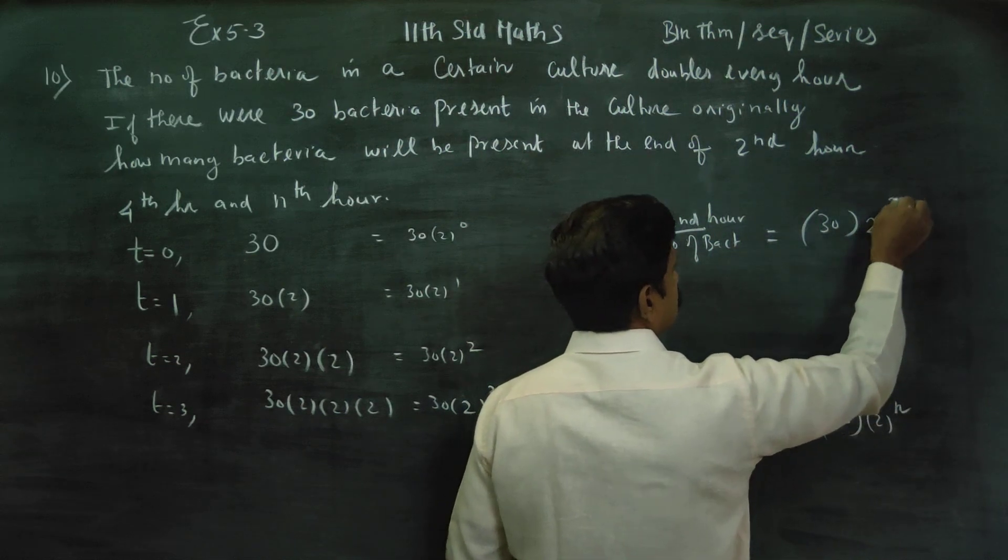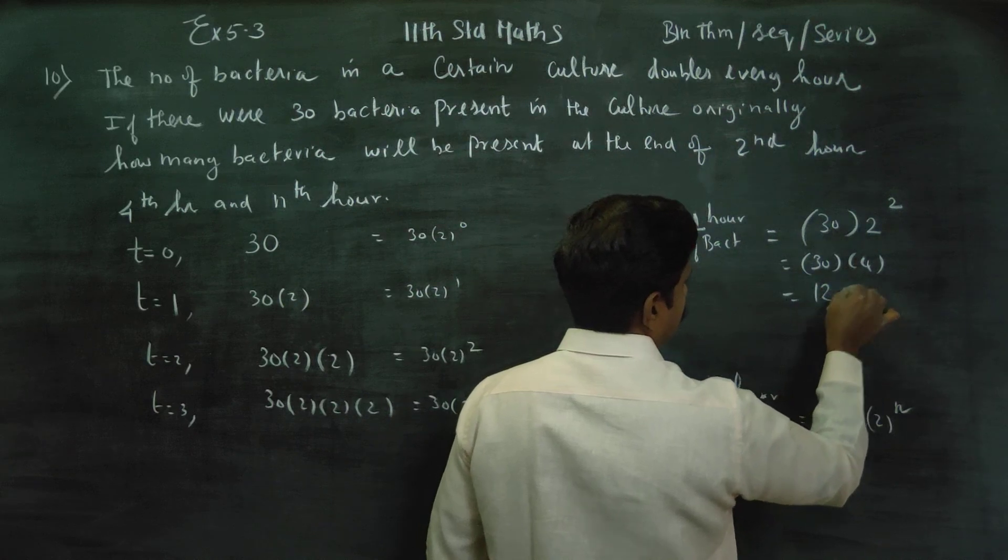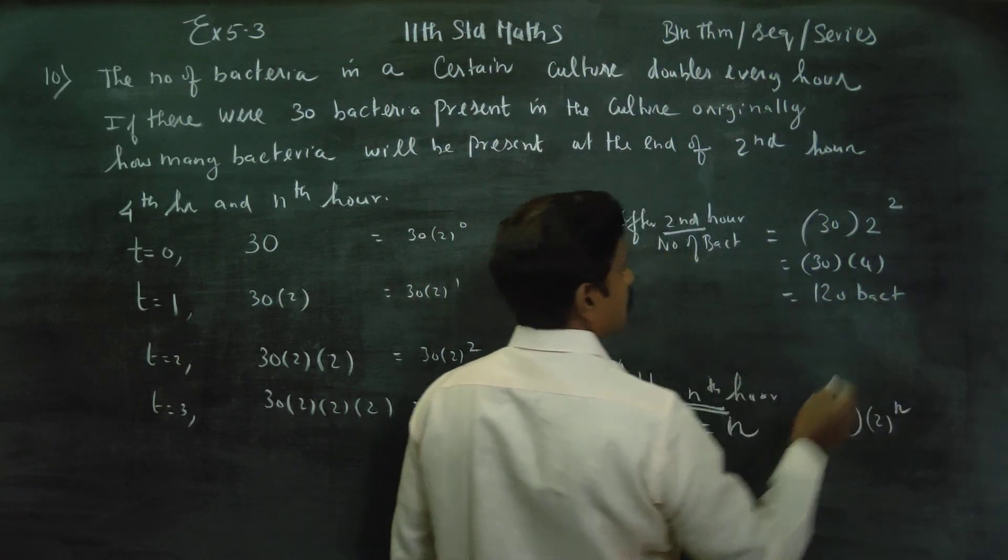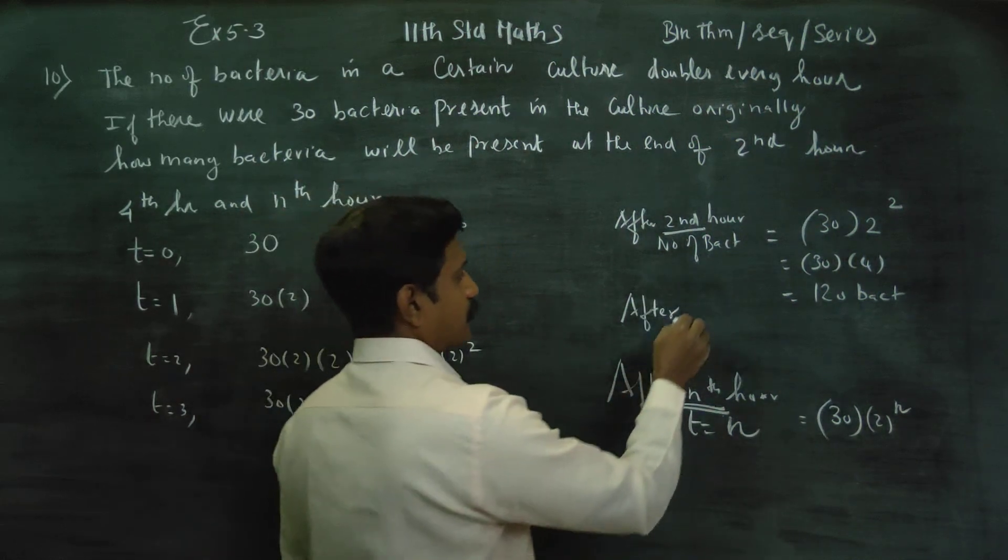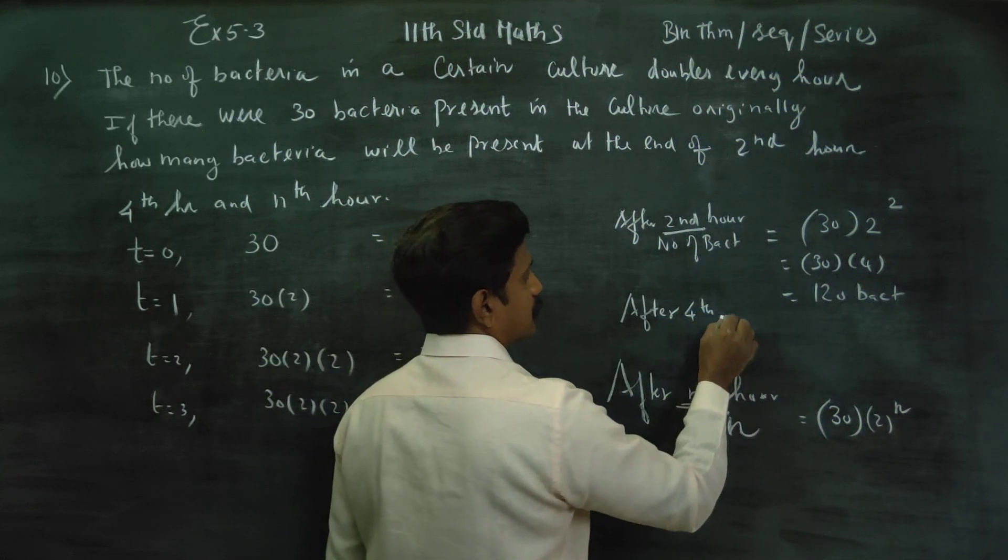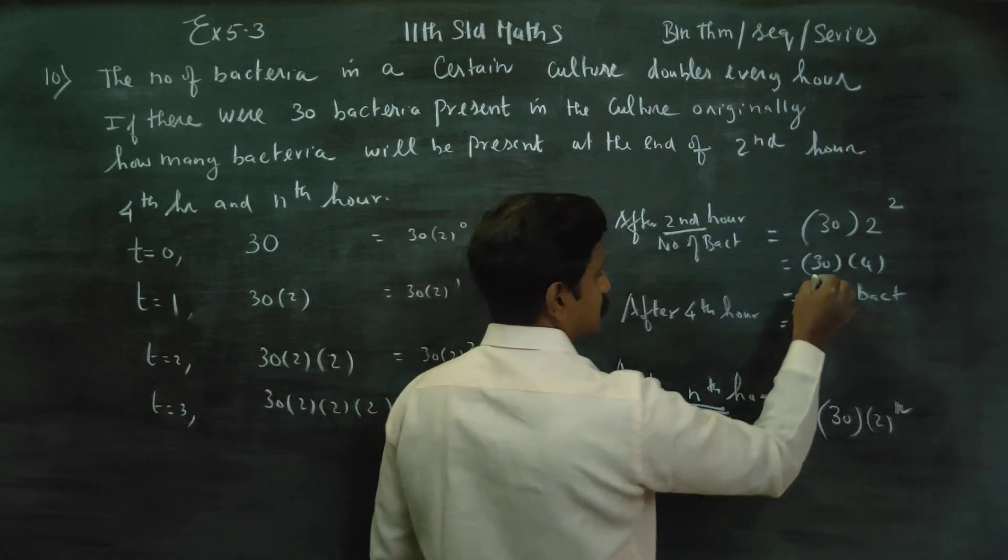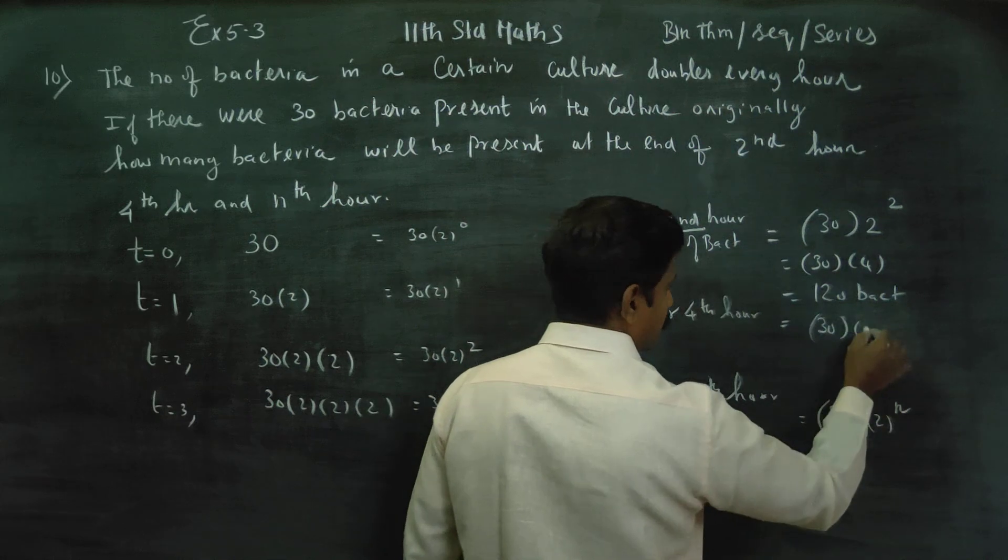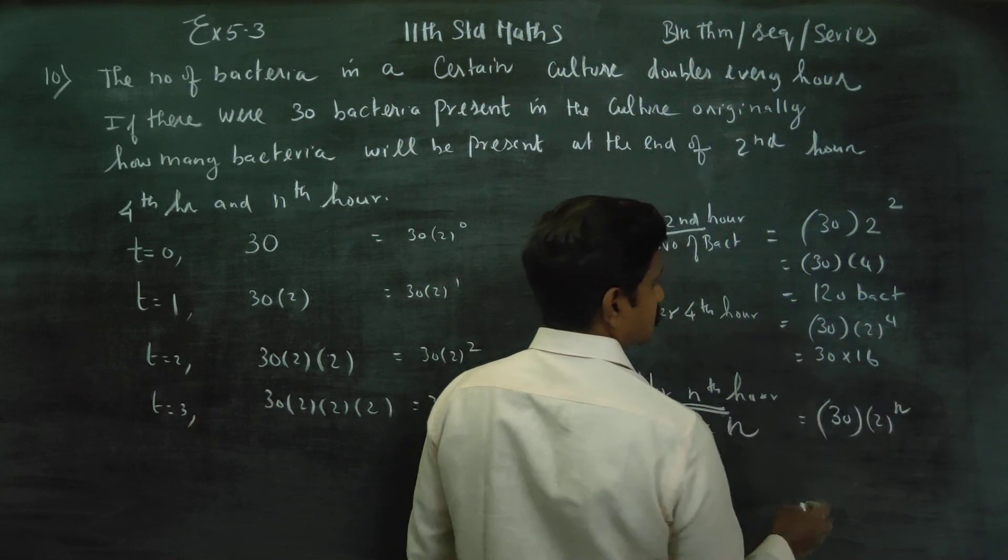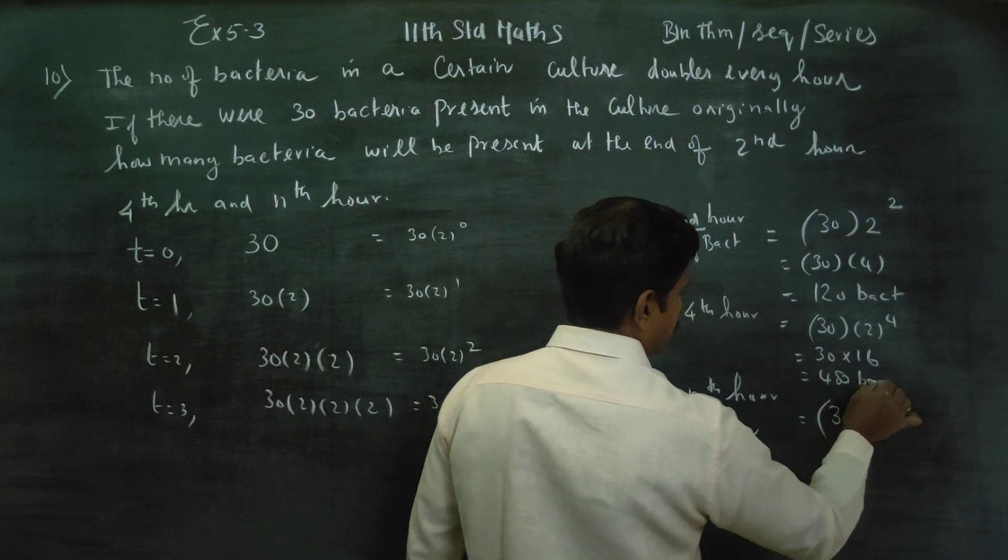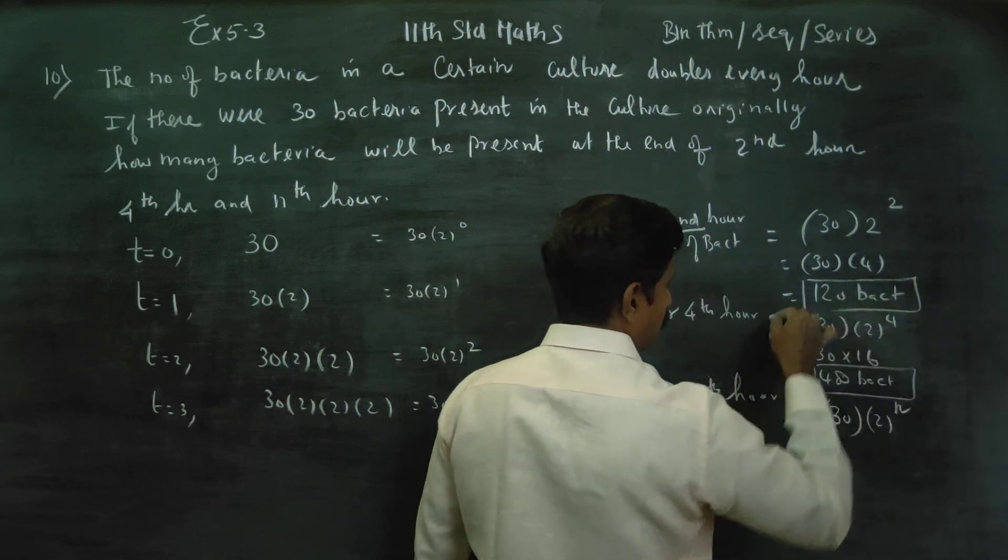After fourth hour. Number of bacteria is equal to 30 into the general formula, 2 power 4. After 30 into 2 power 4 is 16, your answer will be 480 bacteria. This is one answer. 120 bacteria is the answer for second hour.